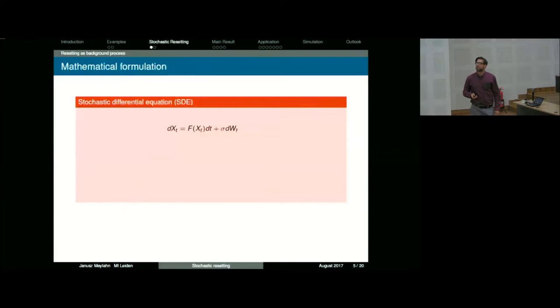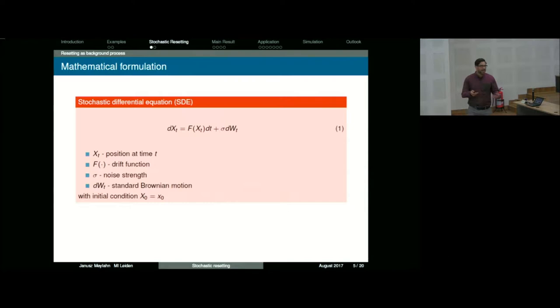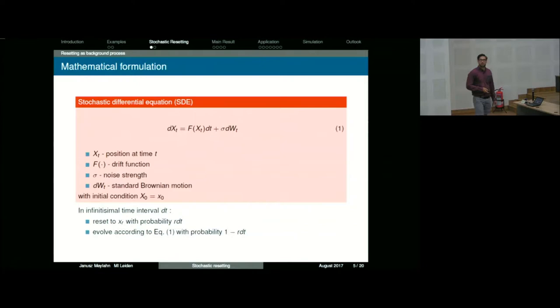How do we write this mathematically? You can choose your favorite stochastic differential equation and add resetting to it. Here, x_t is the position at time t, F is your drift function, sigma is your noise strength, and we have standard Brownian motion with some initial condition. To add resetting: in an infinitesimal time interval, we have a probability r dt of resetting to some reset position x_r — it doesn't have to be zero. With probability 1 minus r dt, we continue with the stochastic differential equation.